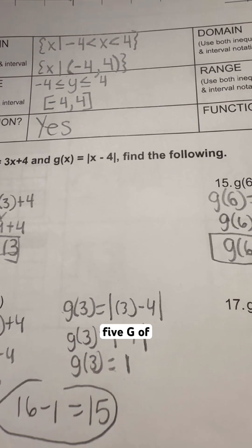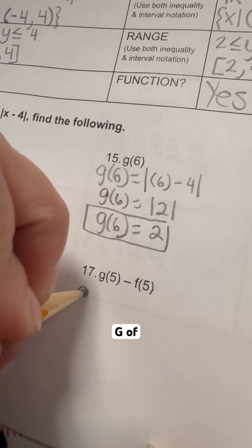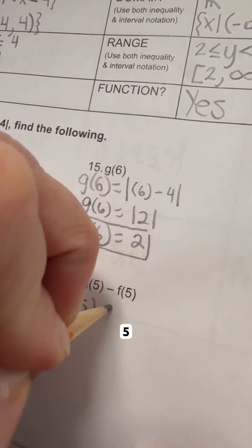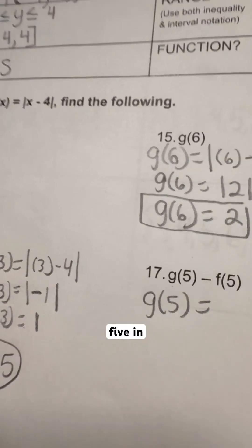So g of 5, g of 5 is this number right here, absolute value of x minus 4. So we are going to replace g of 5 in the place of g of x, and then where x is, we're just going to plug 5 in.